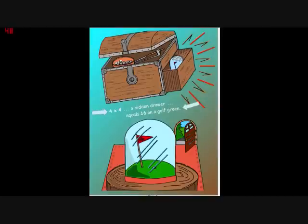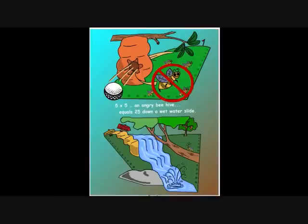So they took the clubs and the golf balls and headed to the golf green. Of course, things didn't get any better over there. The ball went astray and hit an angry beehive. How do you get away from angry beehives? Down a wet water slide — twenty-five meters. Five times five, an angry beehive, equals twenty-five down a wet water slide.